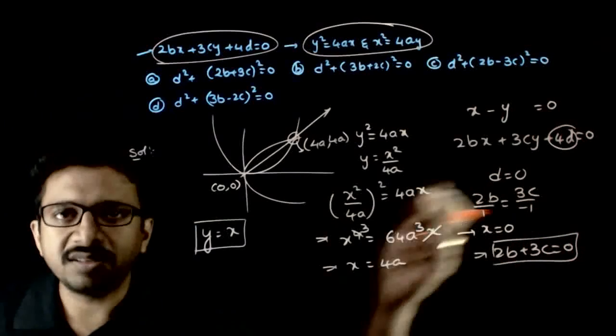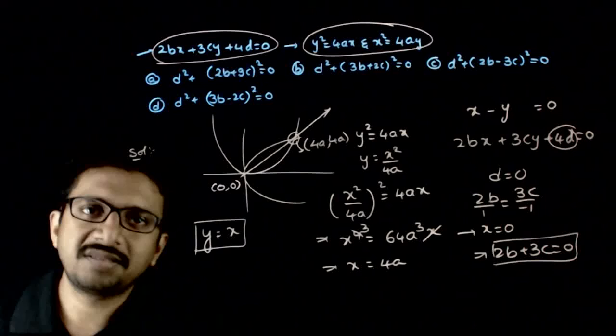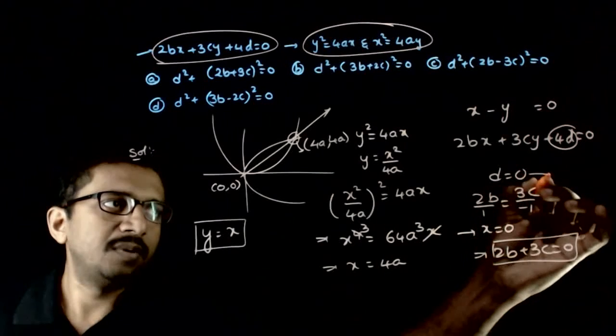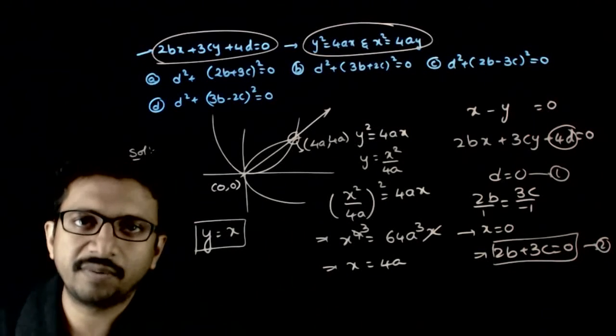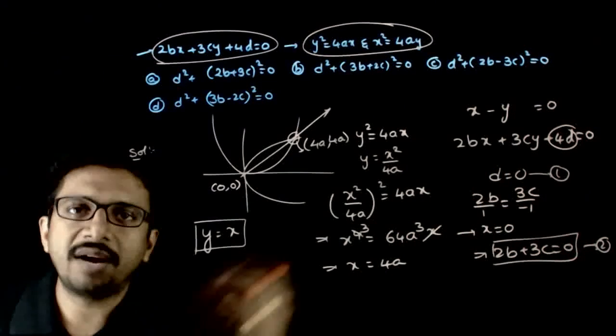And that implies 2b plus 3c equals 0. So minus 2b equals 3c. So 2b plus 3c equals 0. So d equals 0 is one condition and 2b plus 3c equals 0 is another condition. These two have to be 0.